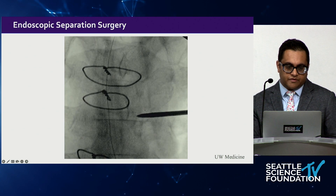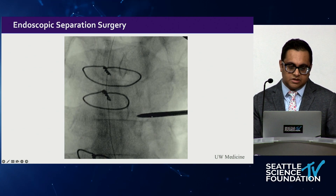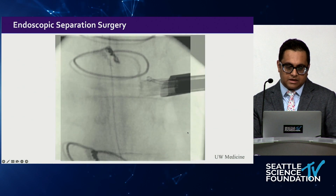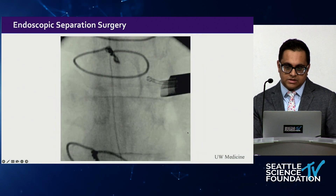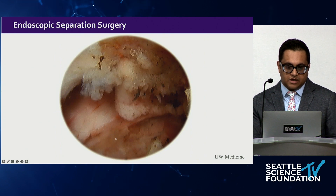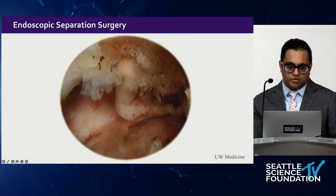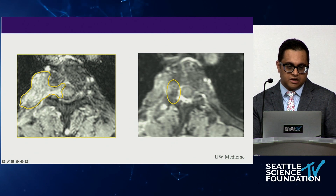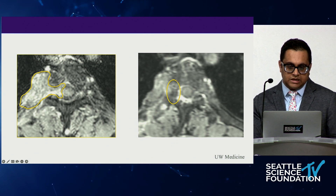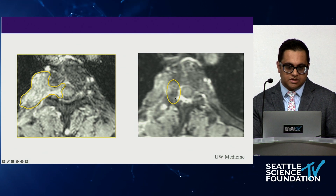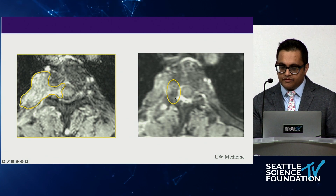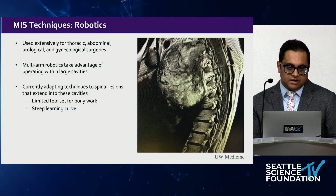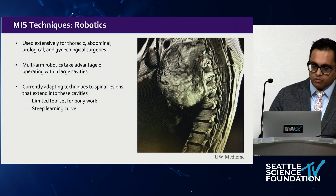Using a transforaminal approach, we reamed the foramen and accessed the needed area. Intraoperative screenshots show the spinal cord deep to us and epidural disease in the foramen that we resected. On postoperative MRI comparing to the preoperative scan, we achieved sufficient decompression for our radiation oncologists to deliver treatment. This was outpatient surgery for metastatic disease.